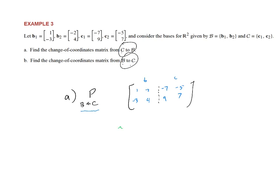After row reduction, we get the identity on the left and (5, 3, 6, 4) on the right — reading across, not down: row 1 is (1, 0 | 5, 6) and row 2 is (0, 1 | 3, 4). So the change matrix from c into b equals [[5, 6], [3, 4]].